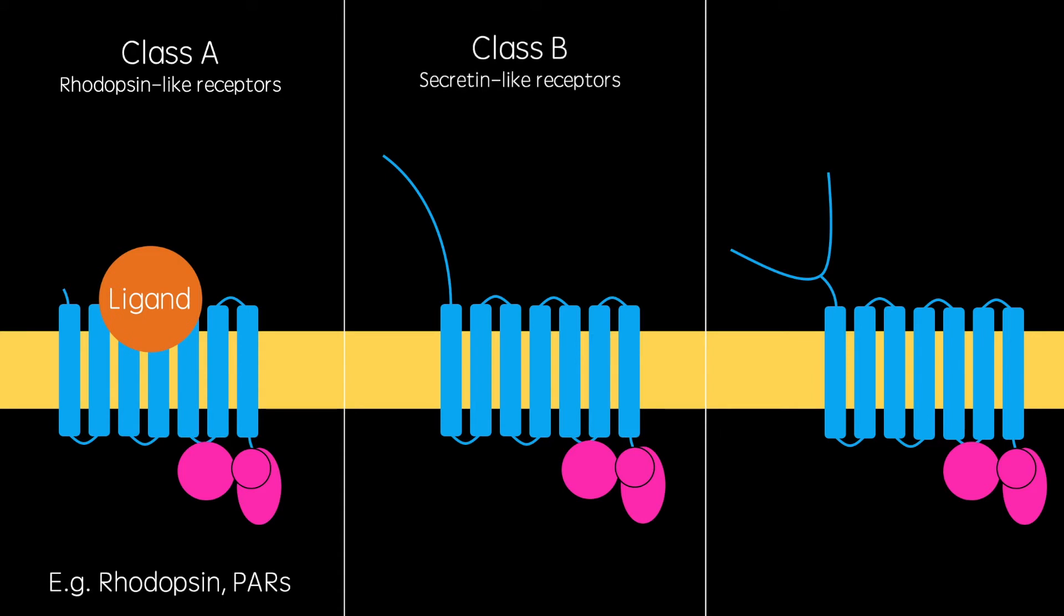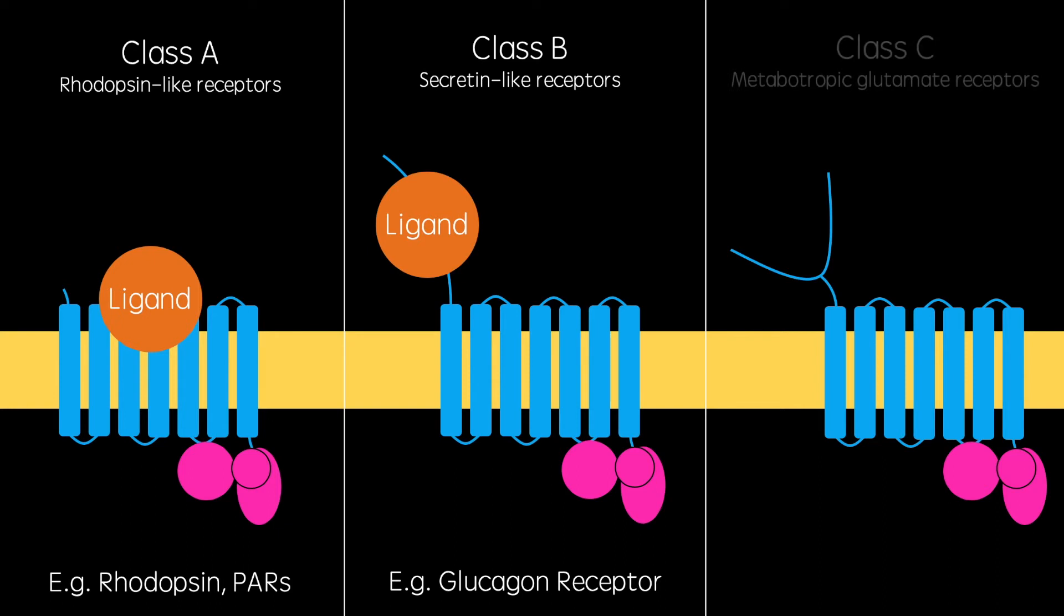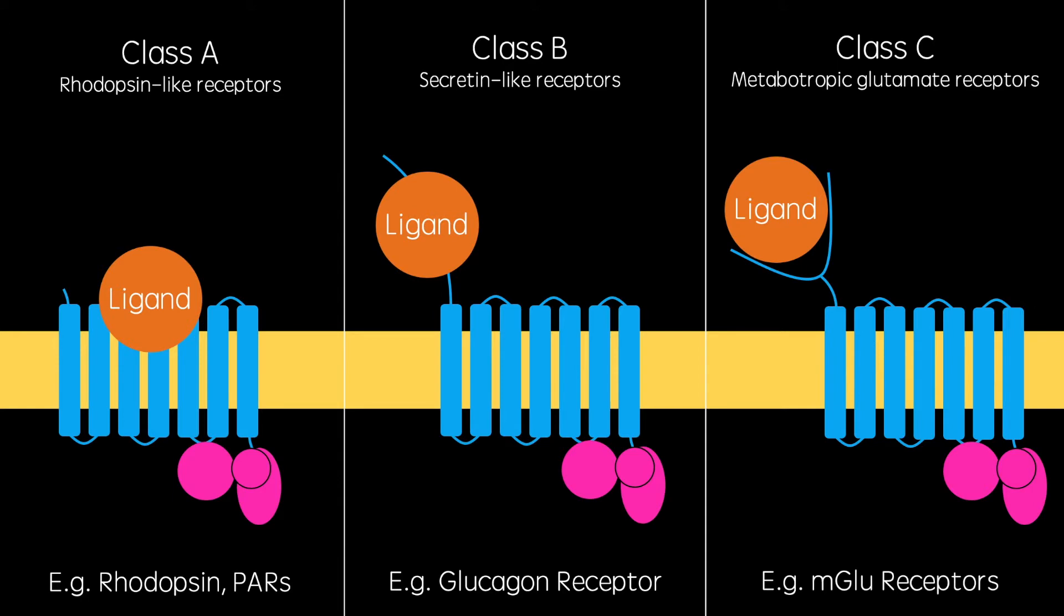Class B receptors have their ligand binding site on the extracellular N terminus and include the glucagon receptor. And class C receptors have a venus flytrap structure where ligands bind and include metabotropic glutamate receptors.